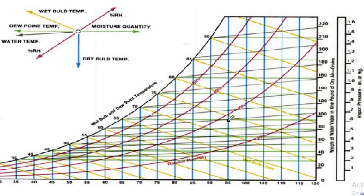To find the wet bulb temperature, we follow the yellow line from the point up to the wet bulb scale. The value is between 70 and 75 — close to 75, approximately 74, which is the wet bulb temperature.